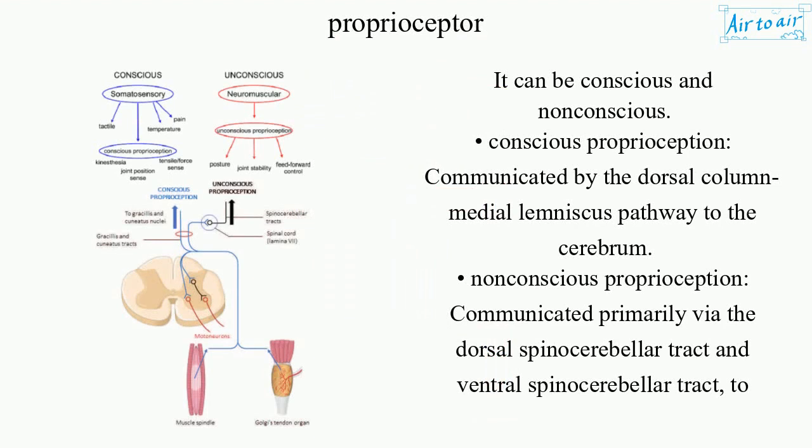Proprioception can be conscious and non-conscious. Conscious proprioception is communicated by the dorsal column medial lemniscus pathway to the cerebrum. Non-conscious proprioception is communicated primarily via the dorsal spinocerebellar tract and ventral spinocerebellar tract to the cerebellum.